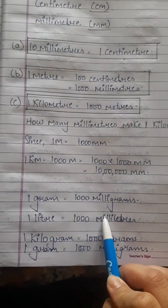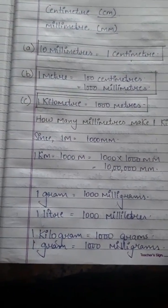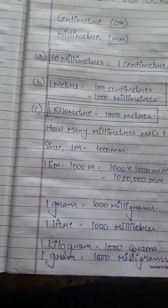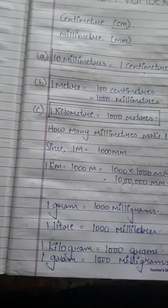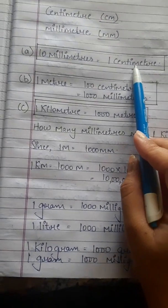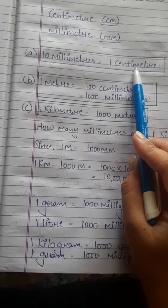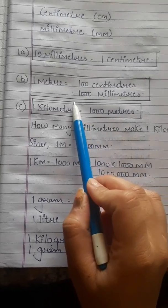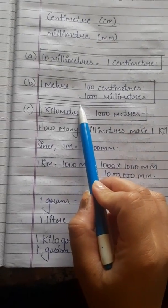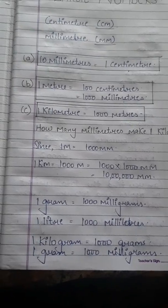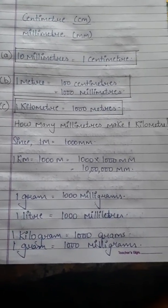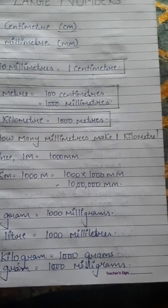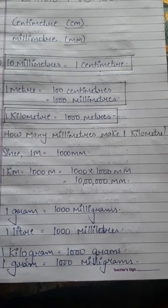Children, from what we have studied so far, we have words like kilometres, millimetres, and centimetres. Among these, kilometre is the biggest and millimetre is the smallest. Kilometre shows a thousand times greater, and millimetre shows a thousand times smaller.